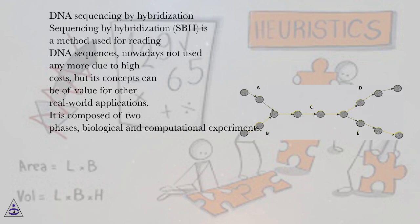DNA Sequencing by Hybridization, SBH, is a method used for reading DNA sequences, nowadays not used anymore due to high costs, but its concepts can be of value for other real-world applications.